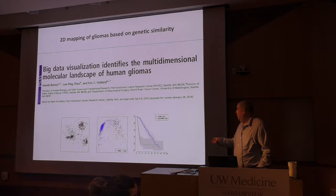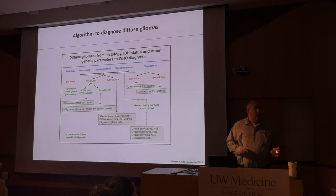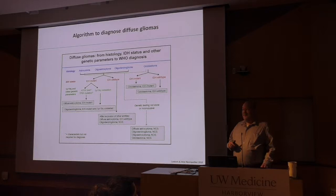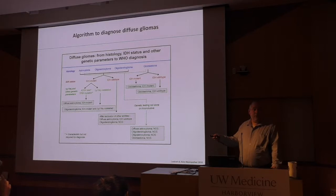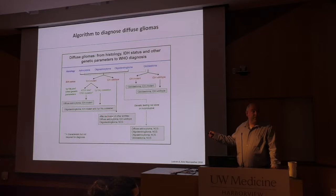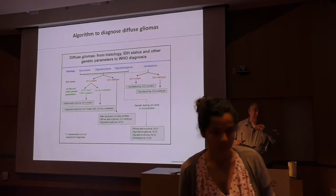Question from the audience: what do you do with the small number of oligos that are co-deleted but are IDH wild-type? Those are thought not to exist. If you're very convinced it's an oligodendroglioma and the molecular doesn't match the histology, there's a category called 'not otherwise specified.' We haven't really had those cases in the last couple of years.